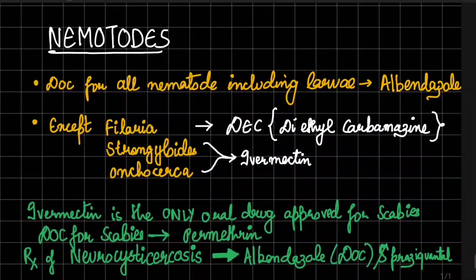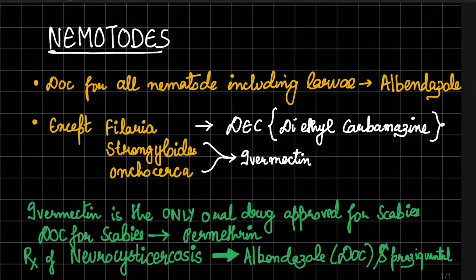Now for nematodes — the drug of choice for all nematodes including larvae is albendazole, except for Filaria, Strongyloides, and Onchocerca. Filaria includes Wuchereria bancrofti, Malai, etc., and the drug of choice is DEC — diethylcarbamazine. For Strongyloides and Onchocerca, the drug of choice is ivermectin.